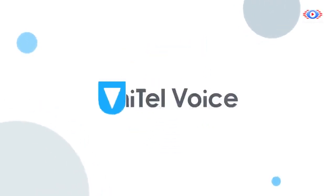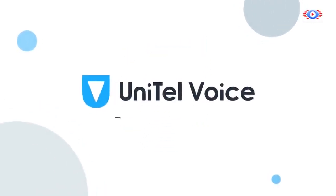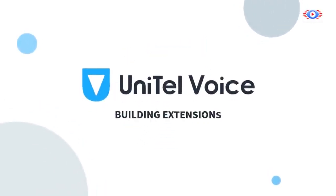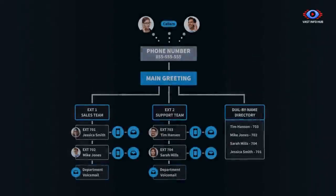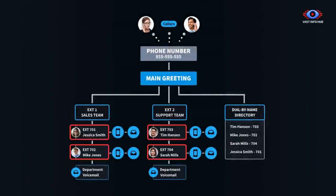In this video, we'll show you how to use extensions to set up call forwarding to manage how your phone system and its users handle calls. There are three types of extensions: employee extensions, department extensions, and dial-by-name directory.